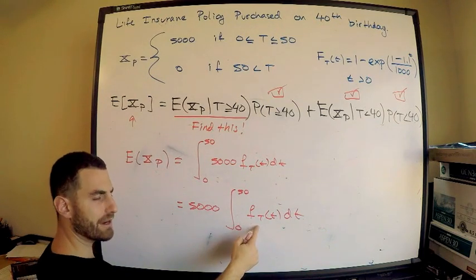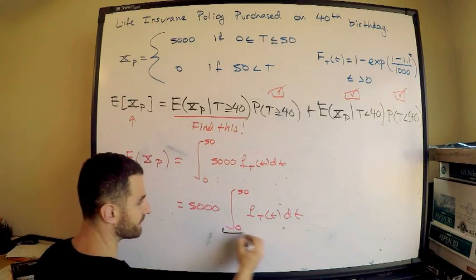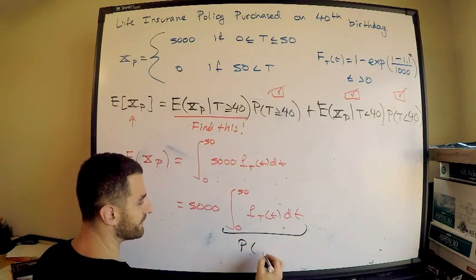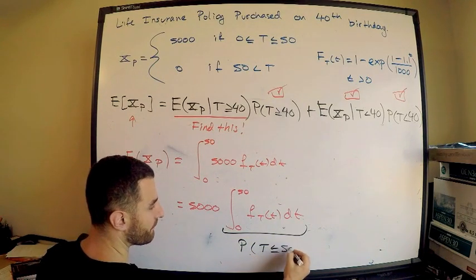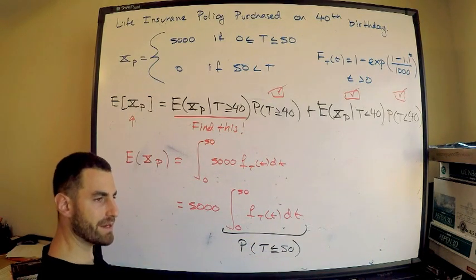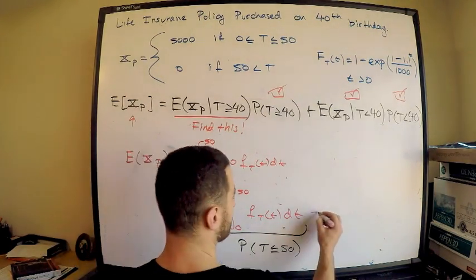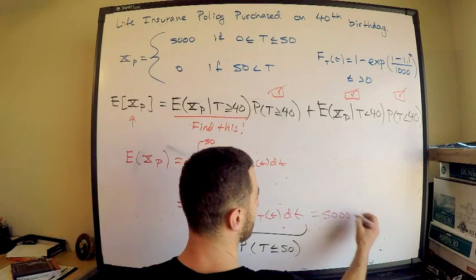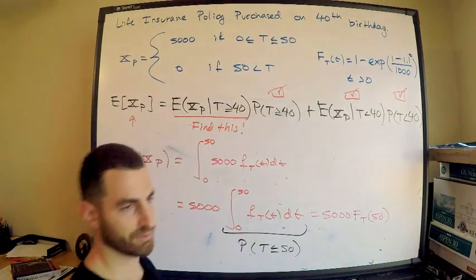This is equal to 5,000 times the integral 0 to 50 of FT, again, PDF, PDF from 0 to 50. But wait a second, what does this mean, how do you interpret this? This value right here, this is exactly what, this is exactly the probability that T is less than or equal to 50. But wait a minute, that's just the CDF, so this is equal to at 50, right? So this is just 5,000 times FT of 50. So we have that as well, so we have everything, we have this, let's just isolate this and we'll be done with it.